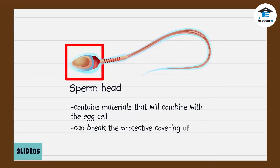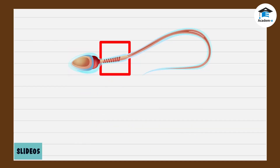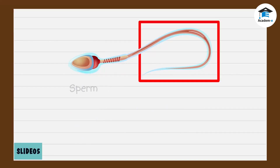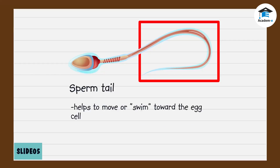The sperm head also has substances that can break the protective covering of the egg cell. The sperm's neck, called the midpiece, provides energy for the sperm tail. The sperm tail helps the sperm cell to move or swim toward the egg cell.